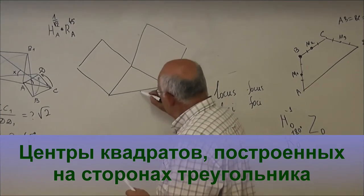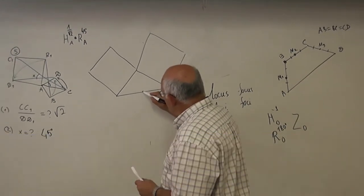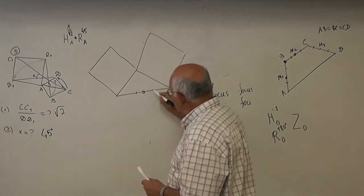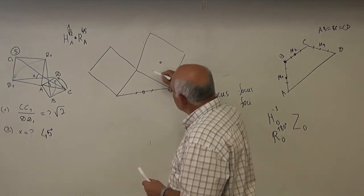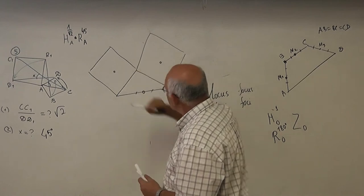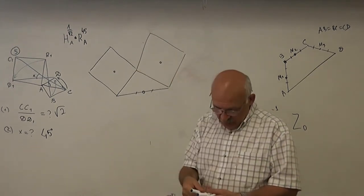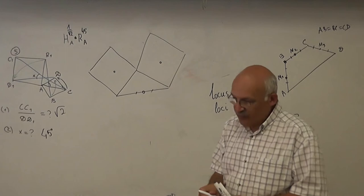And then we take the midpoint on this side. We take the center of this square and we take the center of this square. And then we draw the triangle of these three values.